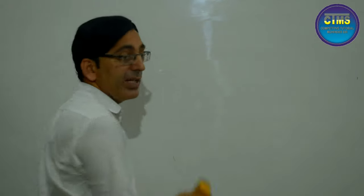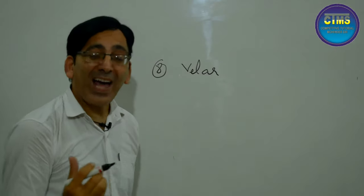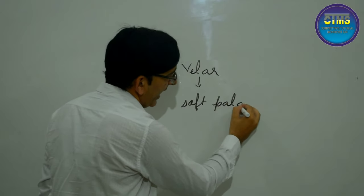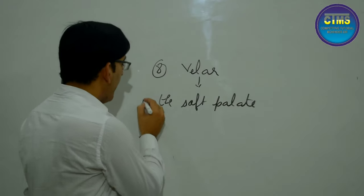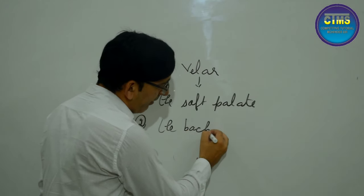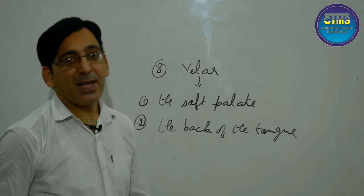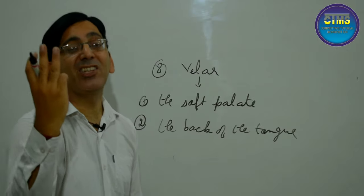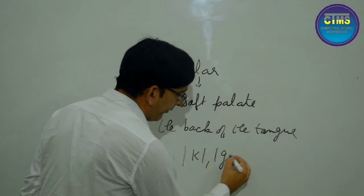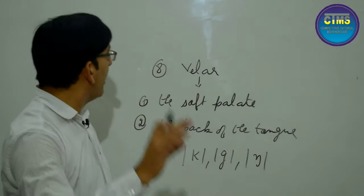The eighth category is called velar. Velar is the adjective of the soft palate, so the passive articulator is the soft palate. The back of the tongue is opposite the soft palate and is therefore the active articulator. There are three velar sounds in English: /k/, /g/, and /ŋ/.